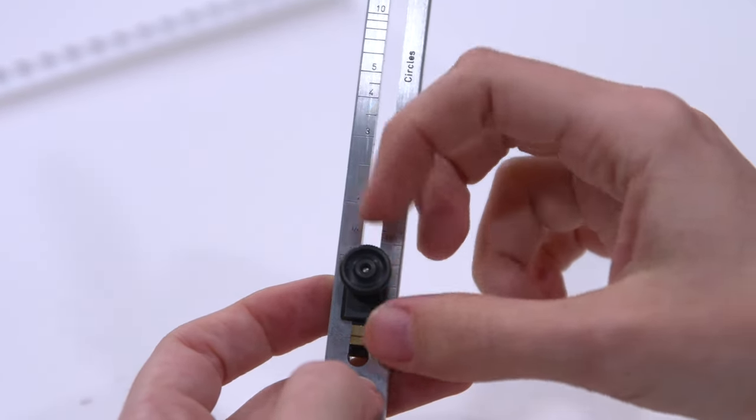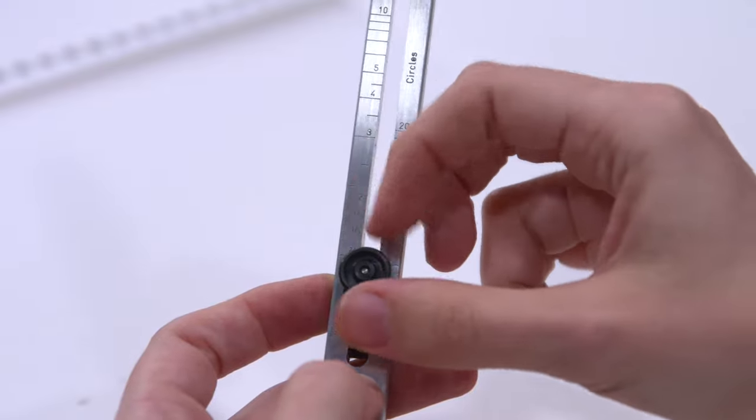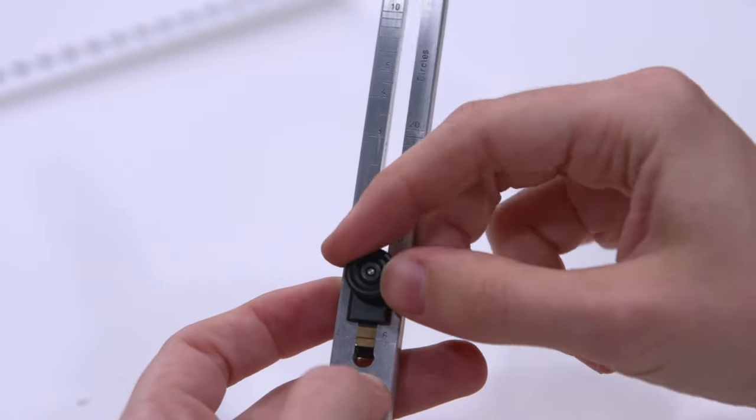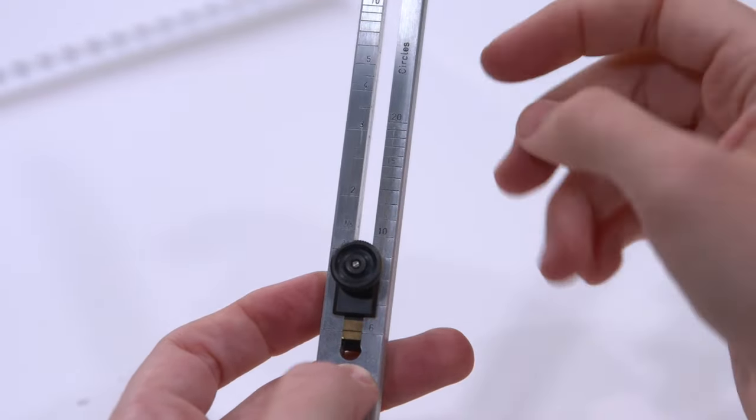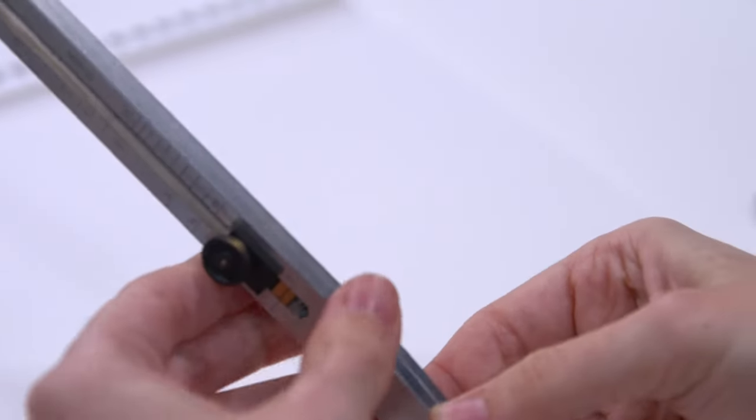This bottom one right here is your 1 to 1 ratio, so if I set it, all I have to do is tighten it up so that it doesn't move up and down at all, and then I can open this up.